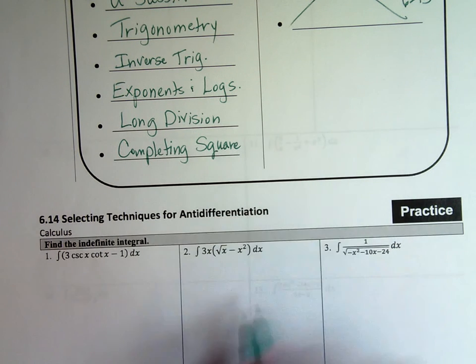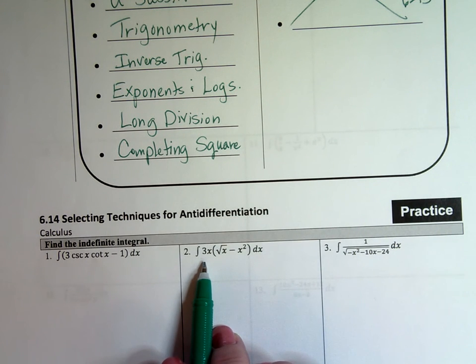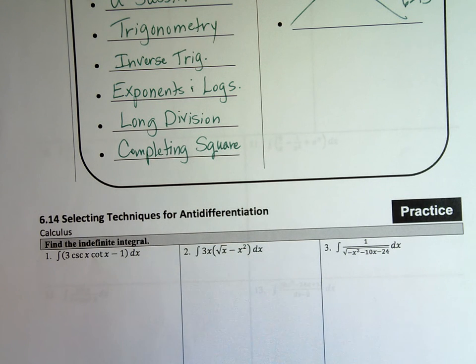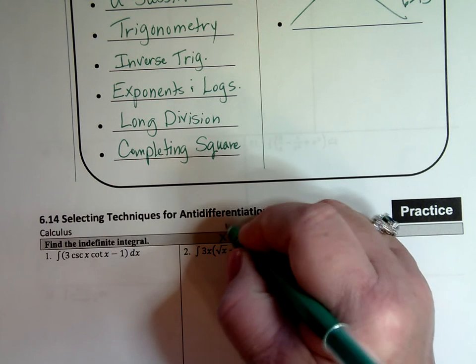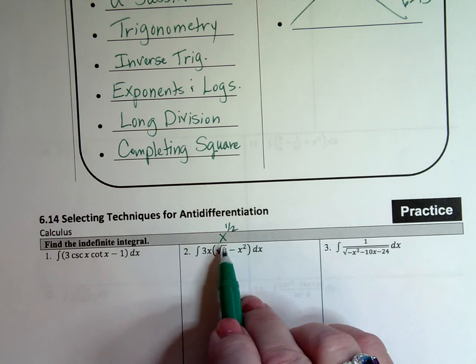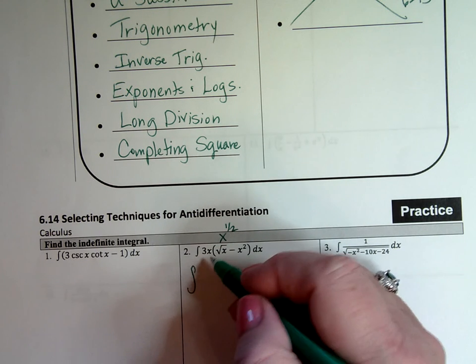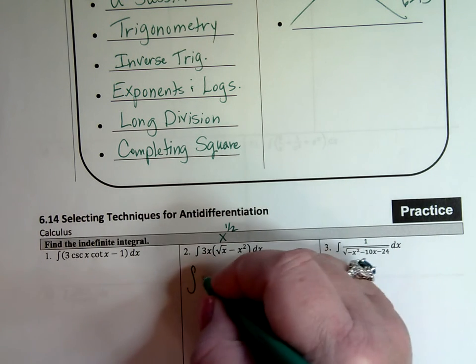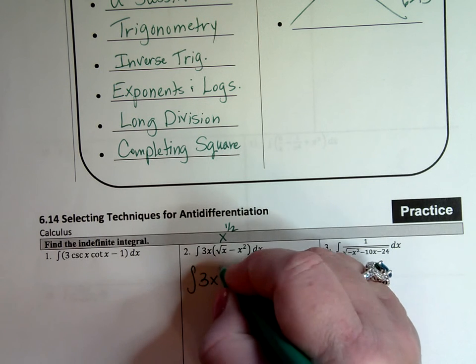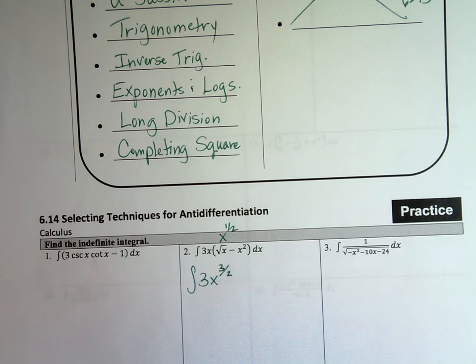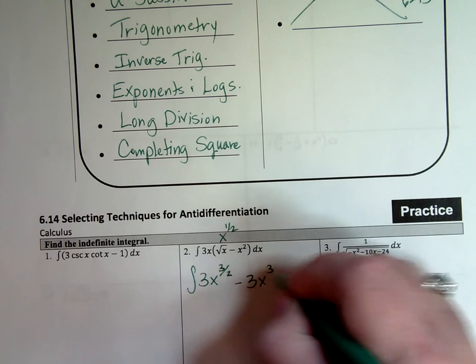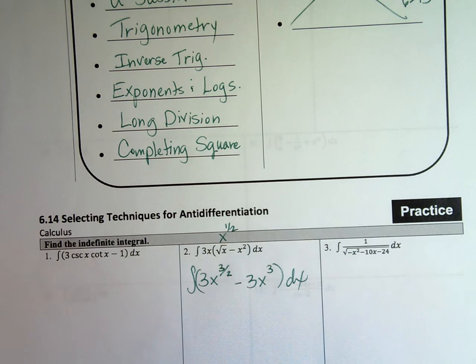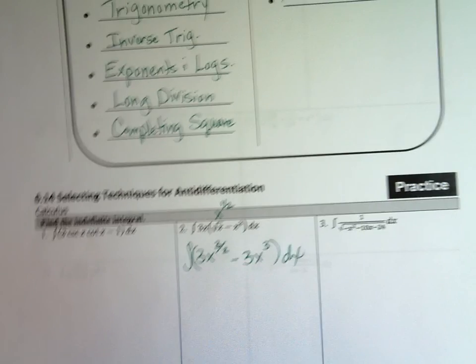First one I picked was number two. And number two looks like this. What would you do with this to find the integral? Hopefully you're saying, well, I would distribute the 3x into this thing. This is like x to the 1½ power. So 3x times x to the 1½ power. Add the powers together. 1 plus 1½ is 3½. This would be 3x to the 3½ power. And then pretty simply, what's 3x times x squared? That would be a minus 3x cubed. And so that then gives me some individual pieces that I can just take the integral of each piece.